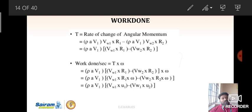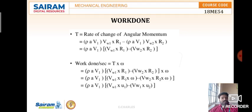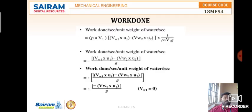Work done per second equals torque times omega: rho·a·v1·(vw1·r1 − vw2·r2)·omega. Multiplying omega inside, r1·omega becomes u1 (the linear velocity at inlet) and r2·omega becomes u2 (the linear velocity at outlet).